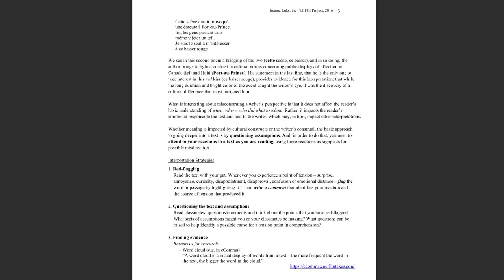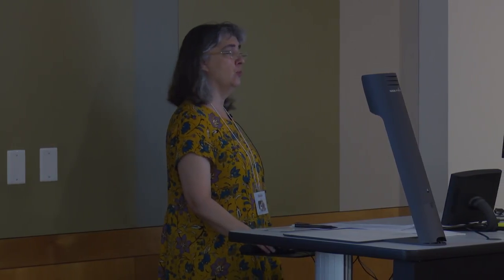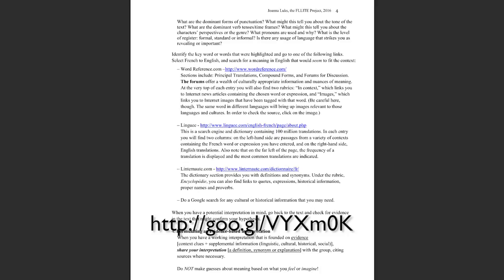The second strategy is questioning the text and assumptions: read classmates' questions or comments, think about the points you've red-flagged, what sorts of assumptions might you be making, what questions can be raised. Then finding evidence. Since this is online, students have direct access to researching online. They can use the word cloud as a clue: what are the dominant forms of punctuation — what might this tell you about the tone? What are the dominant verb tenses or time frames — what might this tell you about the characters' perspectives or the genre? What pronouns are used, and why? So the word cloud can actually be used as clues to help answer questions.